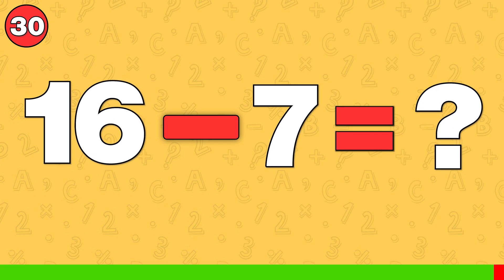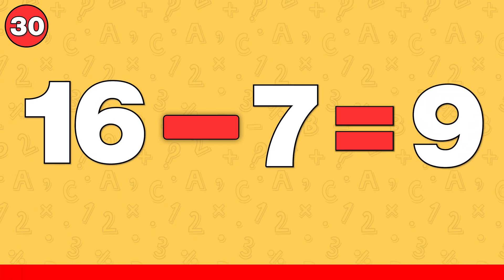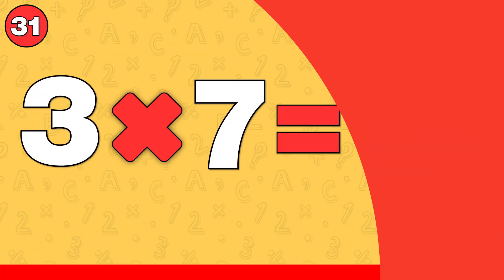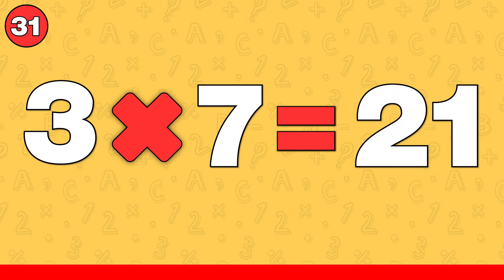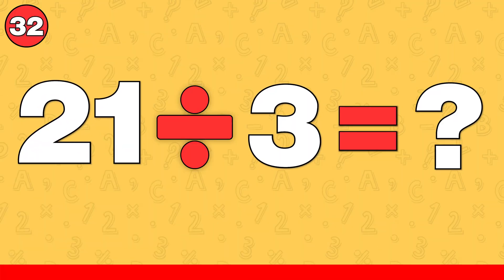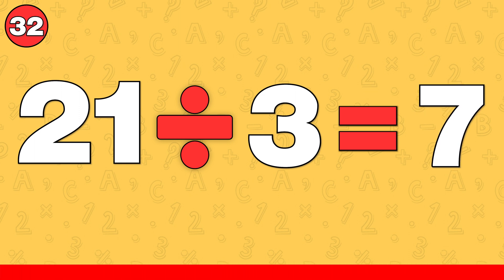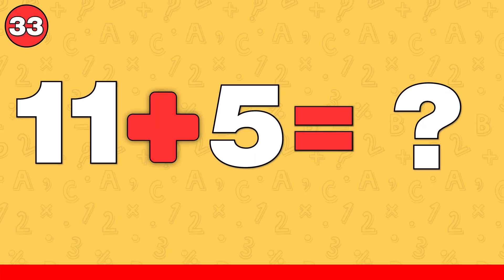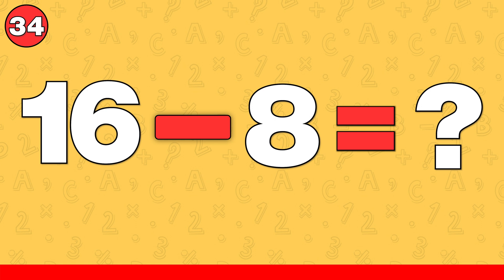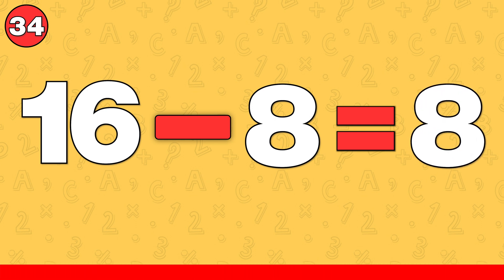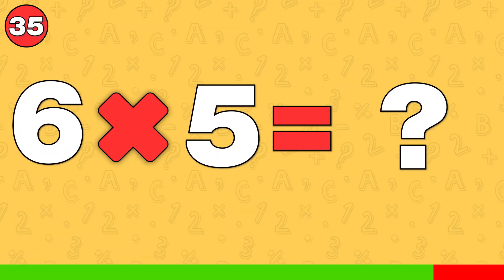16 minus 7. The answer is 9. 3 times 7. The answer is 21. 21 divided by 3. The answer is 7. 11 plus 5. The answer is 16. 16 minus 8. The answer is 8. 6 times 5. The answer is 30.